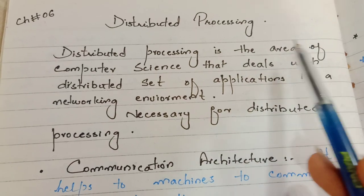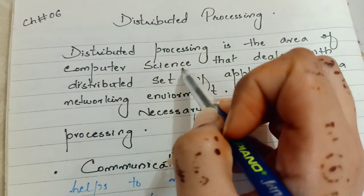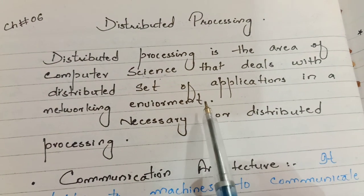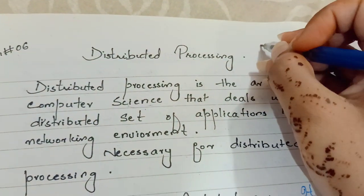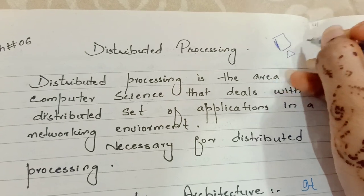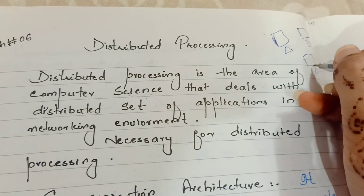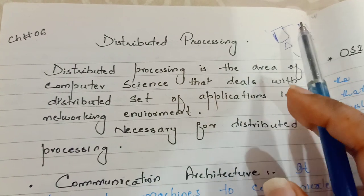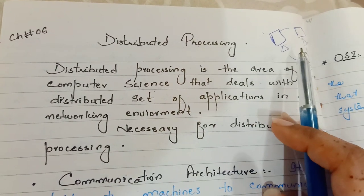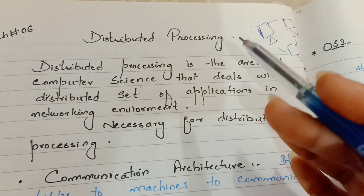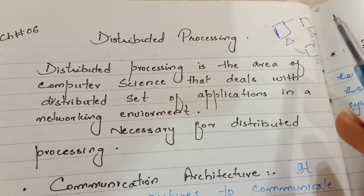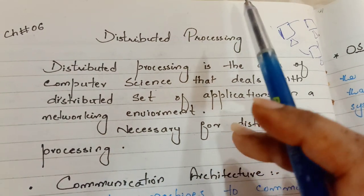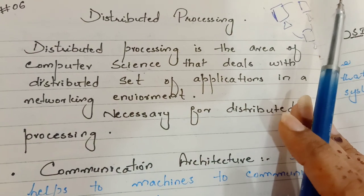Distributed processing is the area of computer science which deals with the distributed set of applications in a networking environment. A networking environment is where devices are connected and different resources are shared. When you deal with a distributed set of applications in such an environment, then you have the distributed processing concept.